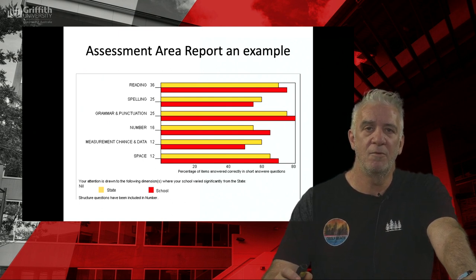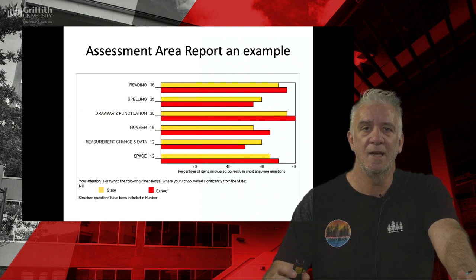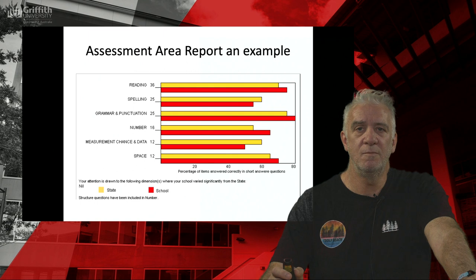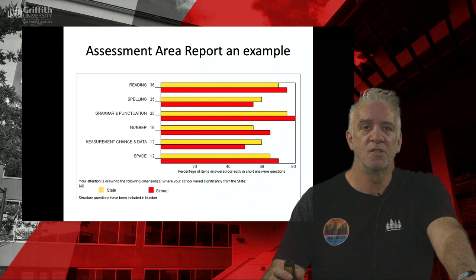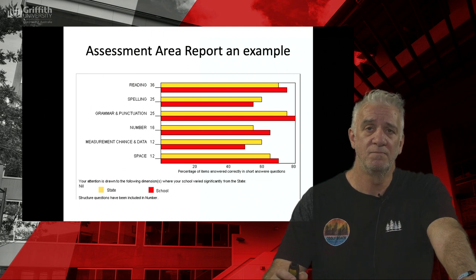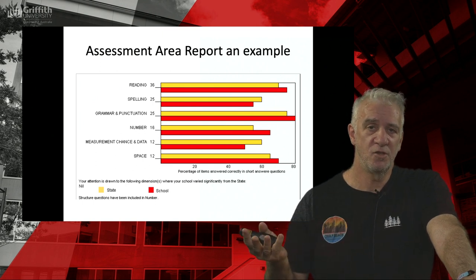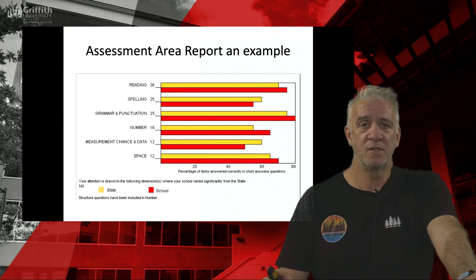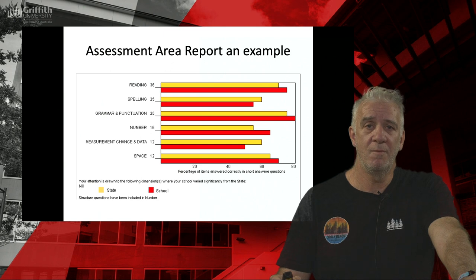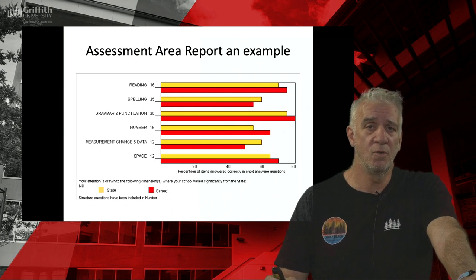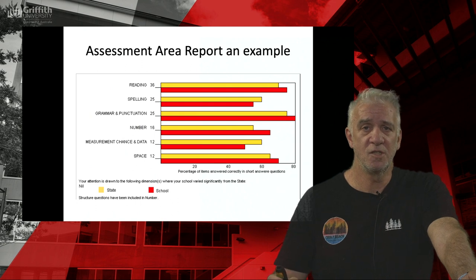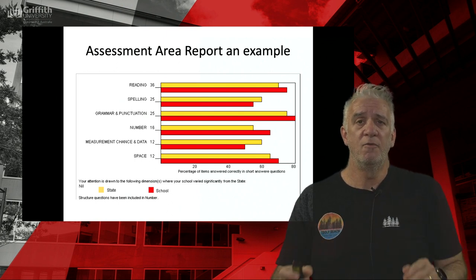In this case, the yellow bar refers to the state average and the red bar refers to your school. So you can see that in terms of number, this school did better than the state average, but in measurement, chance, and data they did worse than the state average. There could be a range of reasons for that, but it gives you information not so much about student achievement but more about your teaching program — for example, that you spent a lot of time on number and less time on measurement, chance, and data.